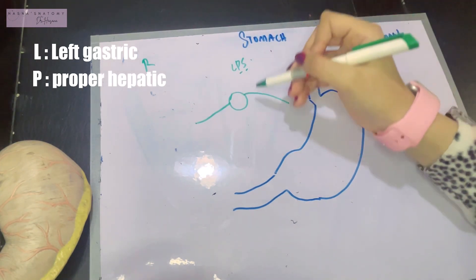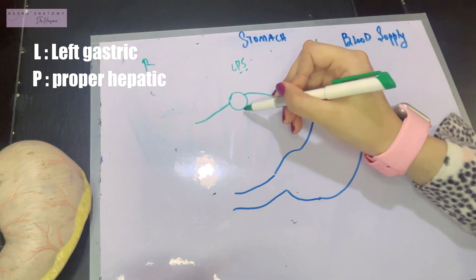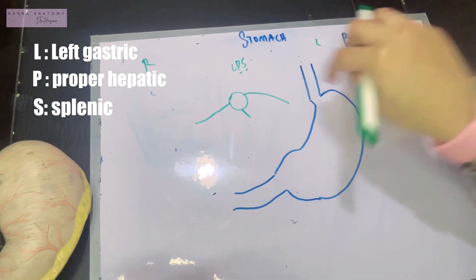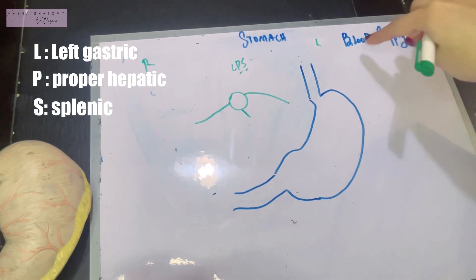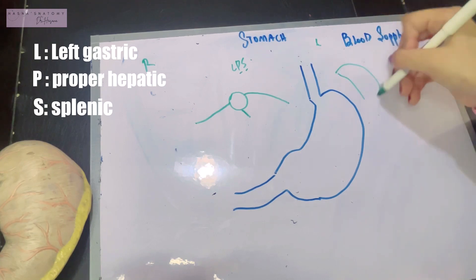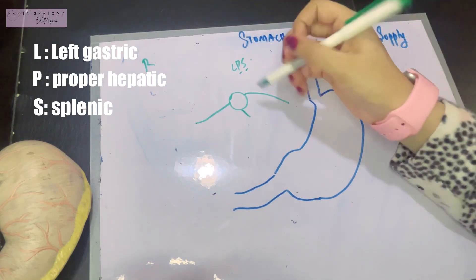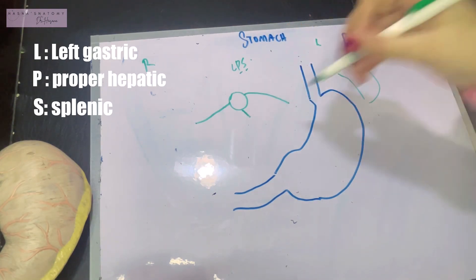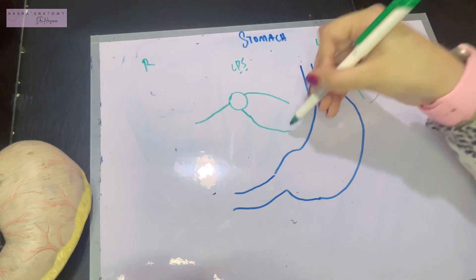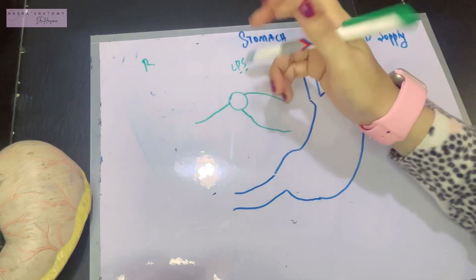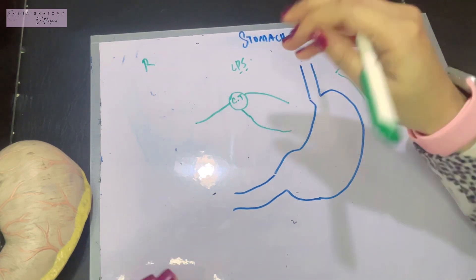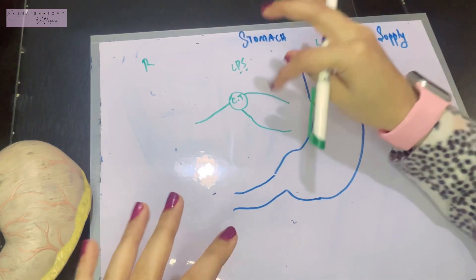Then we have the S branch, which is the splenic artery. And where do you think the splenic artery will go? The spleen lies to the extreme left of the stomach, so obviously it has to go over there. These are the main branches coming from the celiac trunk.